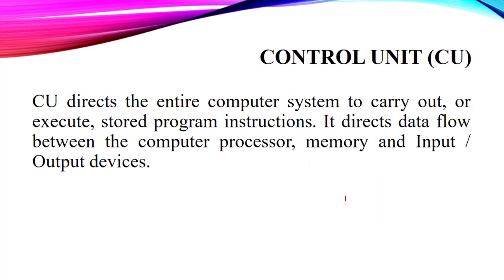Next we have the control unit. This control unit directs the entire computer system to carry out or execute stored program instructions. It directs the data flow between the computer processor, memory and input-output devices. In easy words, it manages the flow of data in our computer's processor, memory and input-output devices.